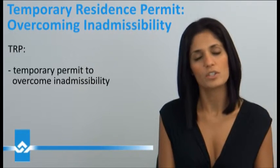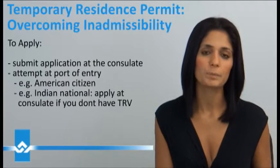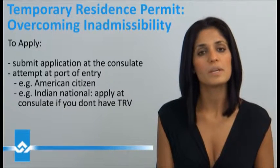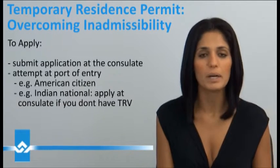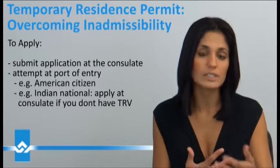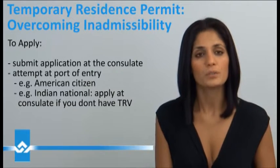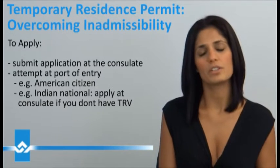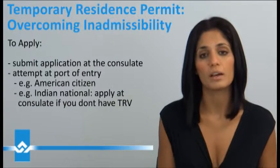Most of our clients when they contact us for a TRP are inadmissible due to some criminal record. There are two ways to apply for a temporary resident permit: either we submit the application at the consulate and wait the extensive processing times of about eight months, or we can attempt at the port of entry, considering that you actually have a visa to enter Canada or you come from a visa-exempt country. For example, if you're an American you can attempt at the port of entry, but if you're an Indian national and you don't have a TRV, then you would have to file at the consulate.